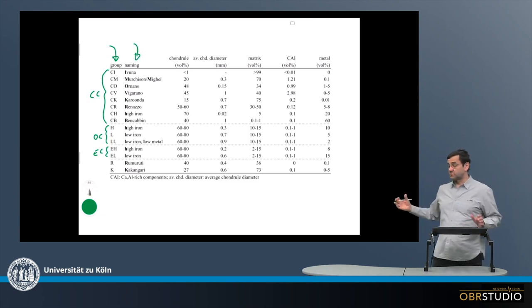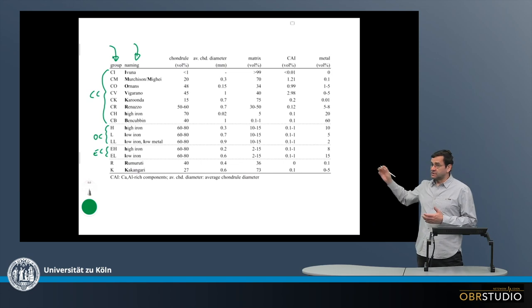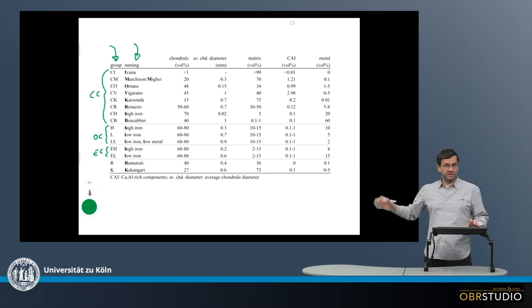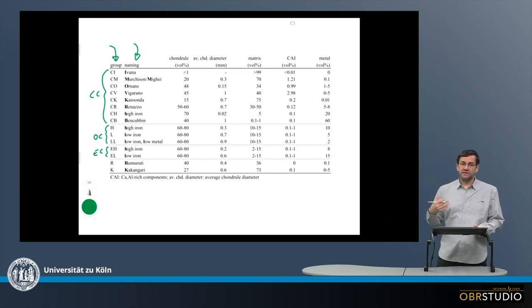In the second column, which is quite interesting, are the type meteorites, after which, in case of the carbonaceous chondrites, the chondrite groups are named. So for example, for CI, this is Ivuna, for CM, Murchison or Mighei, Ornans, Vigarano, and so on.